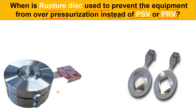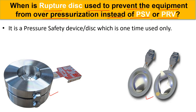Here you can see in the image — these are the rupture disks. A rupture disk is also a pressure safety disk, or pressure safety device — a mechanical device which is used only once. This is a one-time use device.